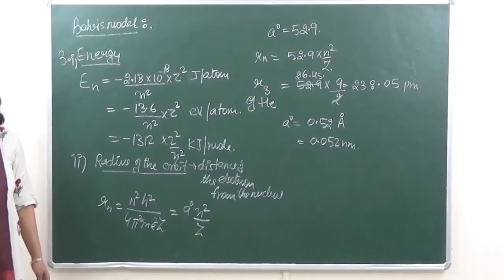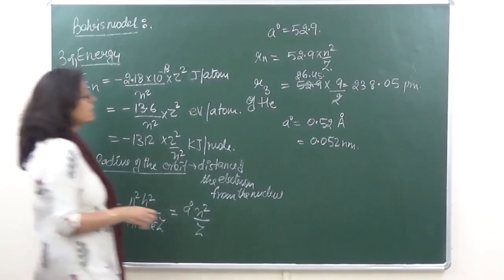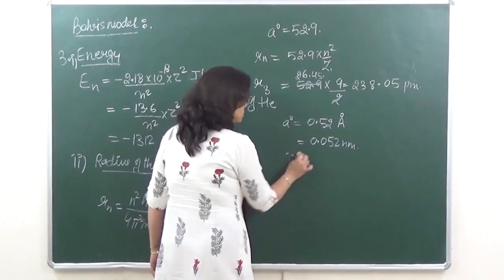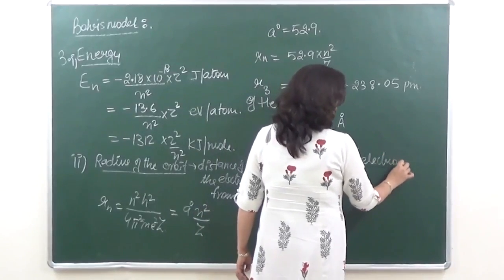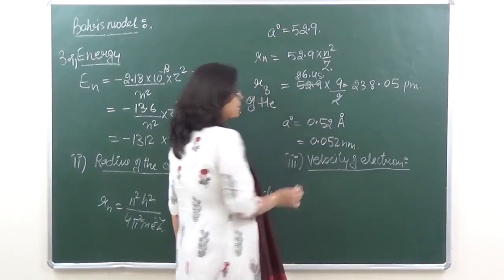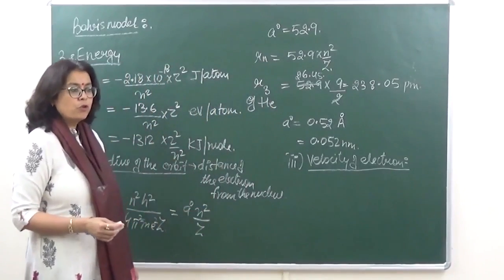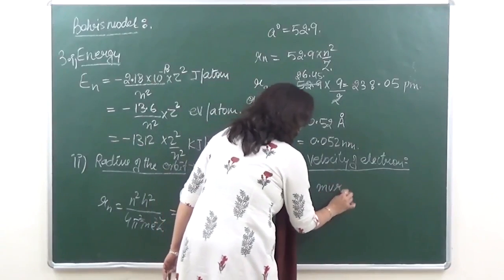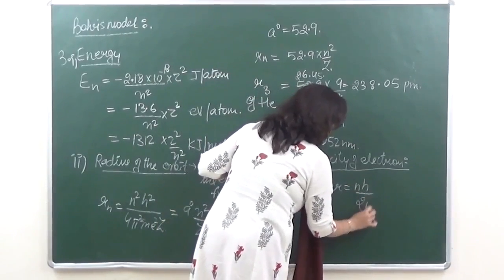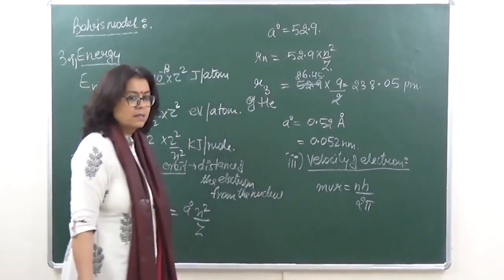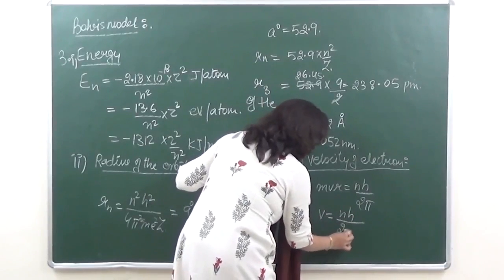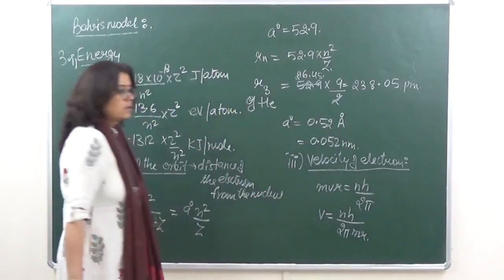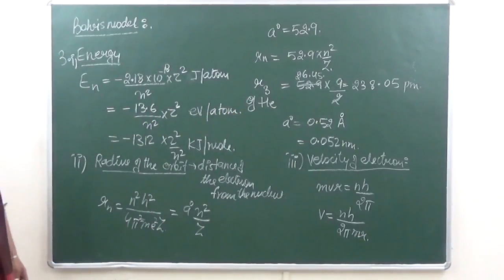After radius calculation, it also helped us to calculate the velocity of electron. Here we have to use quantization formula: according to quantization, mvr that is equal to nh upon 2 pi. So velocity will be equal to nh upon 2 pi m r. This is how we can calculate the velocity.